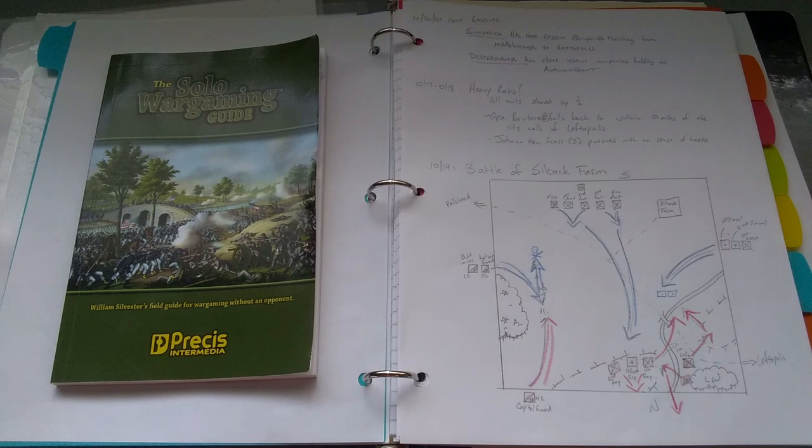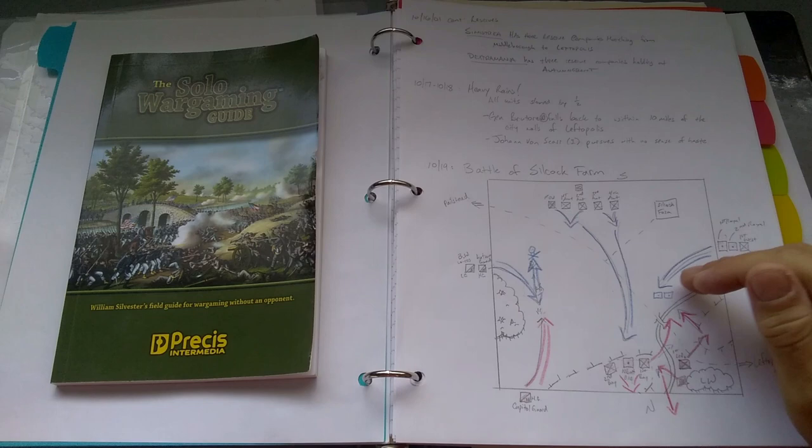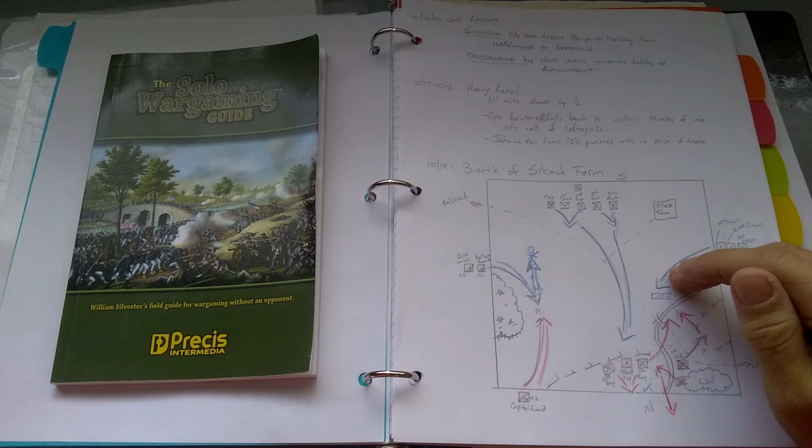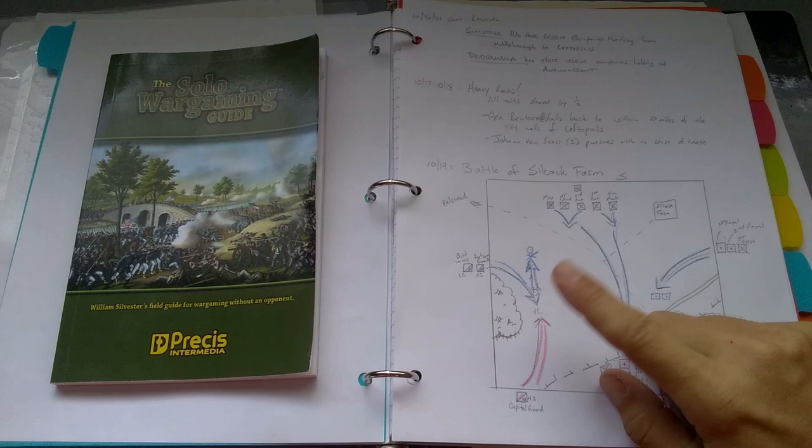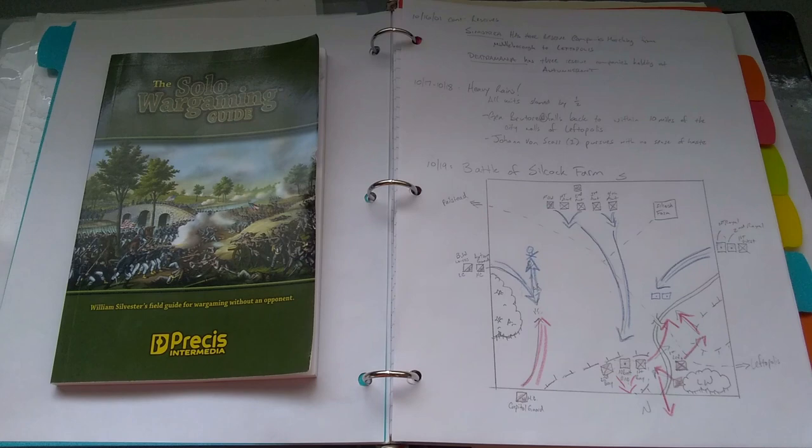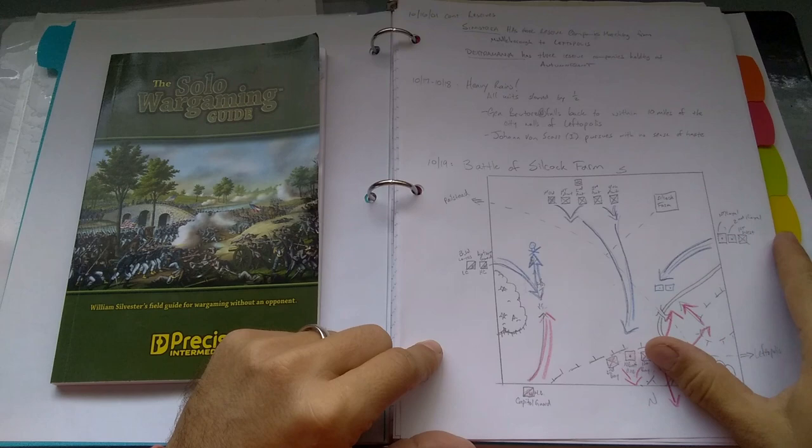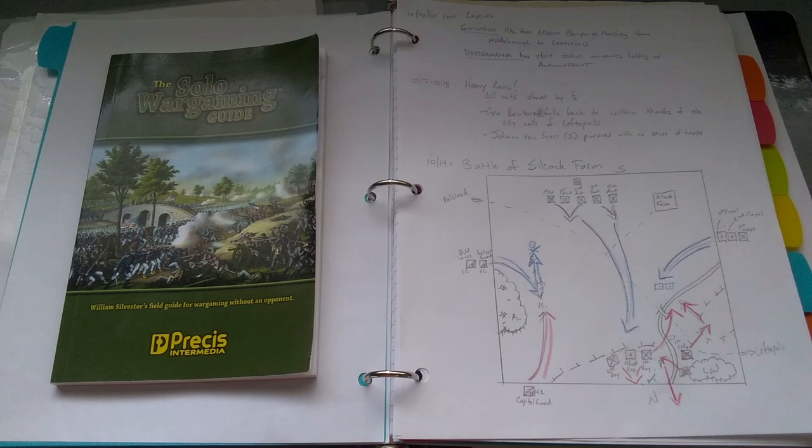With a strong punch up the center and a well-defended battery on the Dextran right, the only real success that the Sinistrayans saw was a resounding defeat for the Dextran heavy cavalry on the Dextran left. The leader of the Sinistrayans was caught alone and fled the battlefield in route. They have a fairly open route of retreat to the capital of Leftopolis.